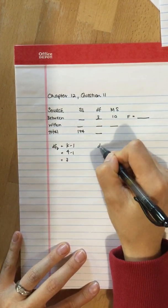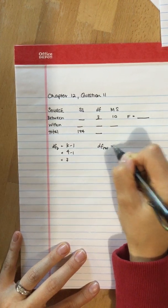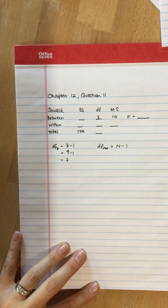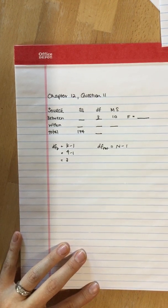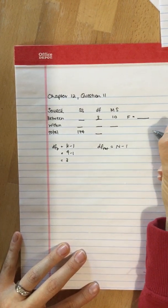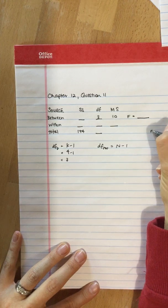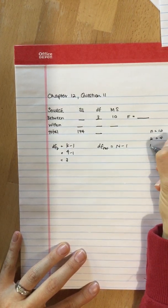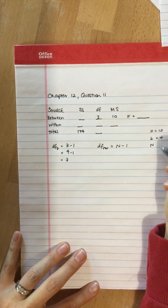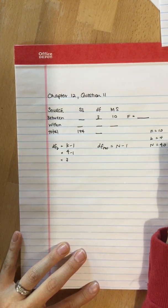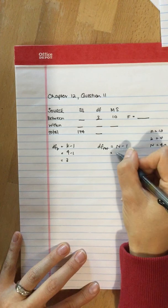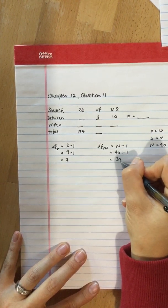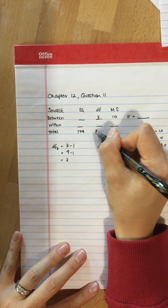Degrees of freedom total is equal to n minus 1. We have four treatment conditions with ten participants in each condition, which means we have n equals ten, k equals four. That means big N is ten times four, so that's 40. So here we have 40 minus 1, which is equal to 39. We can plug that right in.